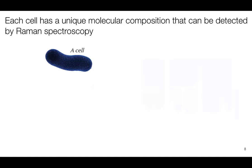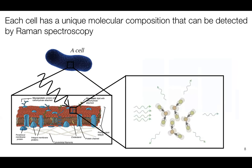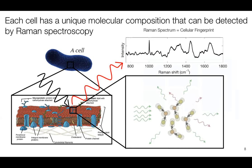You can move one level of complexity higher to something like a cell, which is really just a bag of molecules — sugars, proteins, lipids, and nucleic acids — and do the same thing. You can shine light on that cell, excite the vibrational modes of all these biomolecules, and get back a Raman spectrum, which looks much more complicated but nonetheless is unique to that cell.